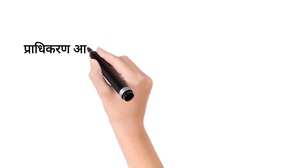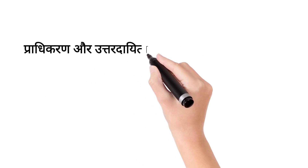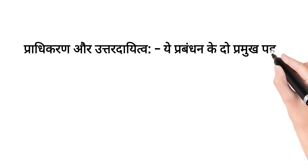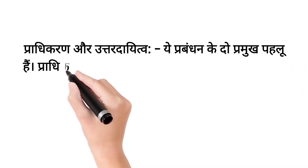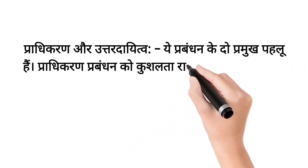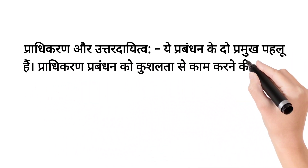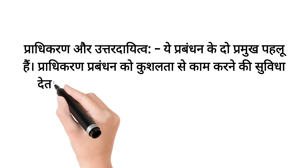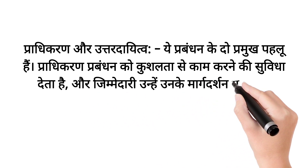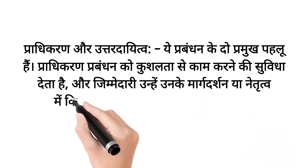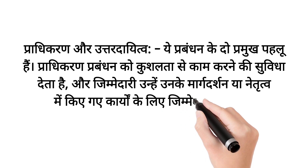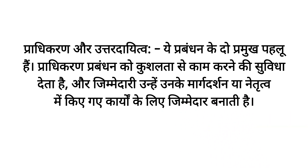Hindi: Pradhikaran aur uttardayitwa — yeh prabandhan ke do pramukh pahlu hain. Pradhikaran prabandhan ko kushalta se kaam karne ki suvidha deta hai aur jimmedari unhein unke margdarshan ya netritwa mein kiye gaye kaaryon ke liye zimmedaar banaati hai.